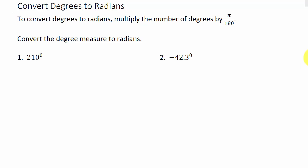In this video, let's look at converting degrees to radians. To convert degrees to radians, we multiply the number of degrees by pi over 180. So let's see what we've got.